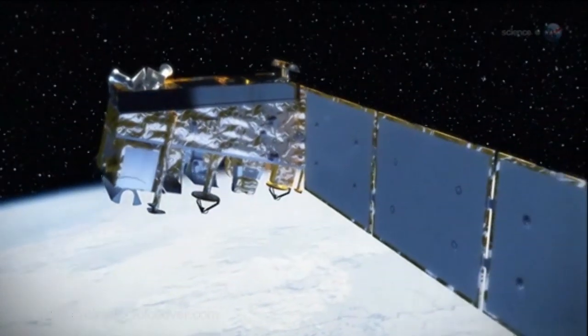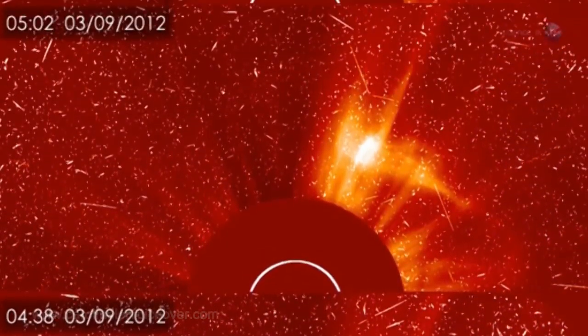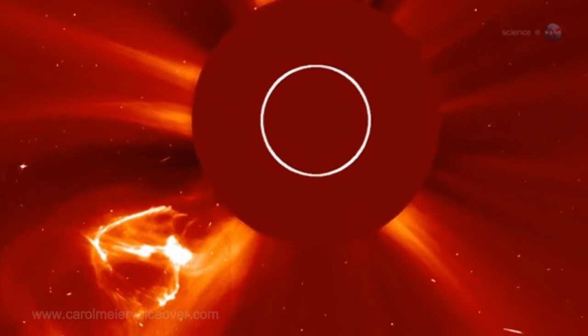NASA-funded researchers say that a flurry of solar storms from March 8th through 10th dumped enough energy in Earth's upper atmosphere to power every residence in New York City for two years.